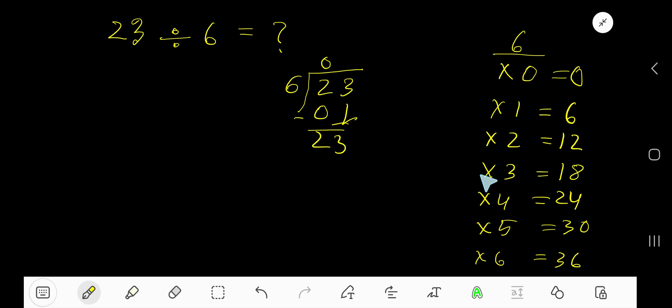6 goes into 23 how many times? 6 times 4 is 24, which is greater, so 3 times. 3 times 6 is 18. Subtract to get 5.